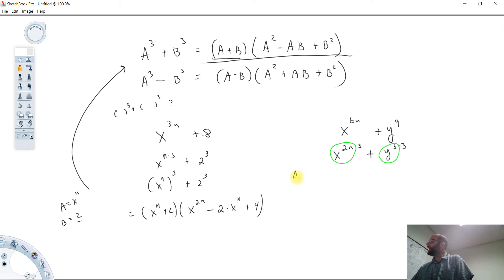So here, our a, if you will, is x to the 2n, and our b is y cubed. You don't have to write this out, but I do suggest you do so if you're having trouble factoring these things.